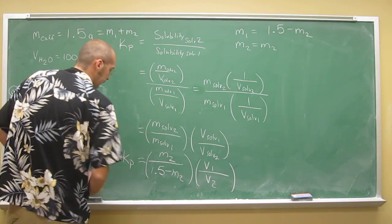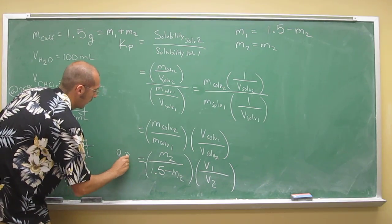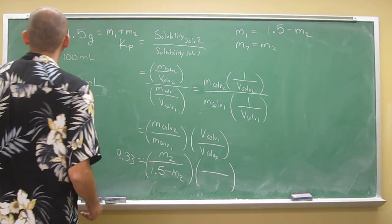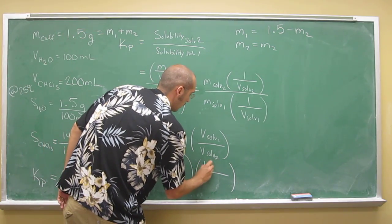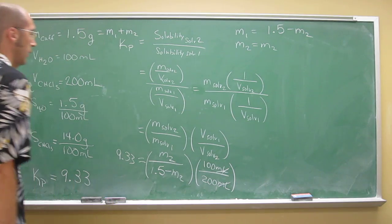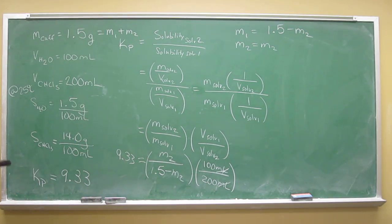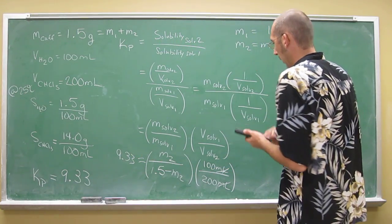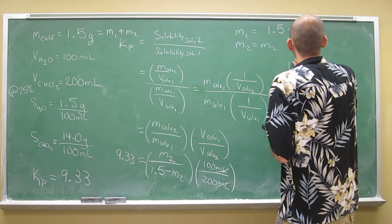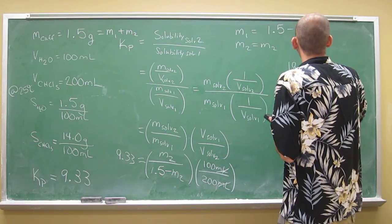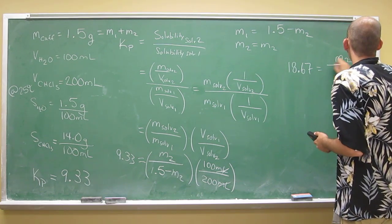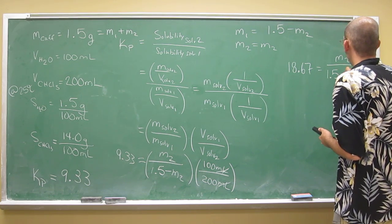So we know Kp is 9.33, and we know V1 and V2, volume of solvent 1 is 100, volume of solvent 2 is 200 mL. So that's going to be 1.5, right? So what do we got here now? So 9.33 times 2, that's going to be 18.67. We'll just say, give it enough sig figs to go on with the problem.